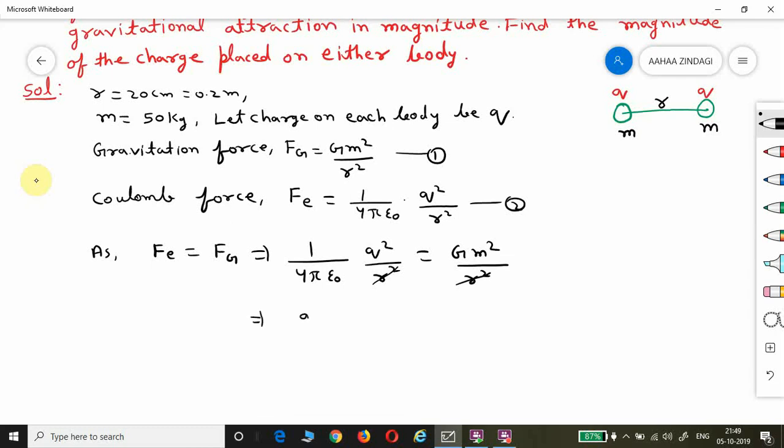One by four pi epsilon naught, which is 9 times 10 to the power 9, times q² equals G, which is 6.67 times 10 to the power minus 11, times mass 50 times 50. So q equals square root of 6.67 times 10 to the power minus 11 times 2500 divided by 9 times 10 to the power 9.